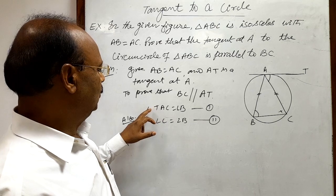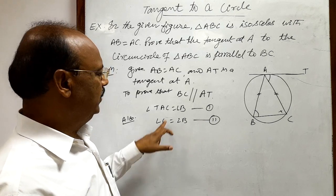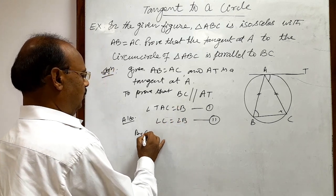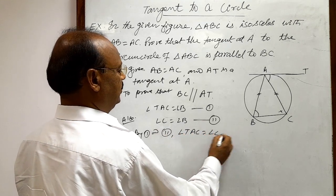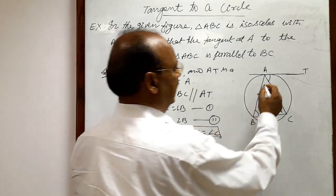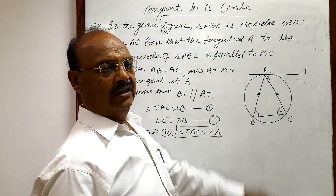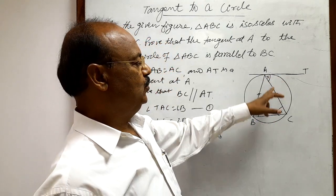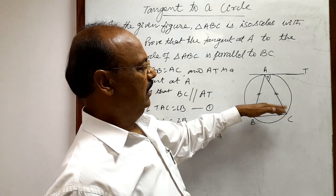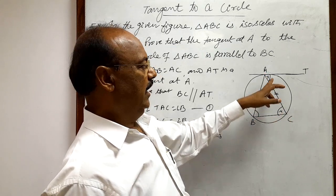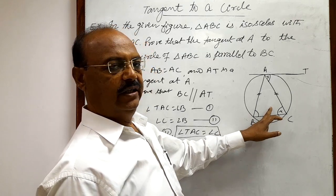both angle TAC and angle C are equal to angle B. So we can write by 1 and 2, we can write angle TAC is equal to angle C. So this angle TAC is equal to angle C. These two angles are equal. And obviously, these two angles are alternate angles because these are two lines and this is a transversal between these two lines. And these two alternate angles are equal: angle TAC is equal to angle C. So,